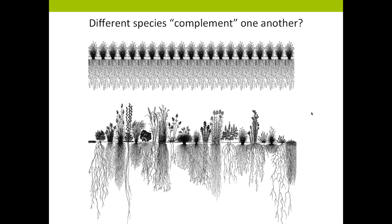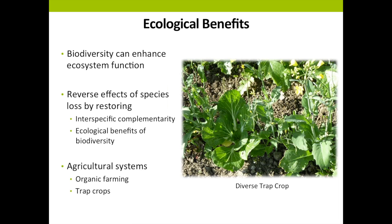This leads us to wonder: if different species complement one another, can we apply this to trap crops? Biodiversity's ecological benefits can be harnessed to alleviate pest problems in agriculture. However, it remains particularly challenging to reverse the effects of species loss by restoring interspecific complementarity. Some of the clearest progress has come from work in agricultural systems, particularly organic farming, which can conserve species and improve biodiversity by reducing chemical pesticides and incorporating control strategies like trap cropping.